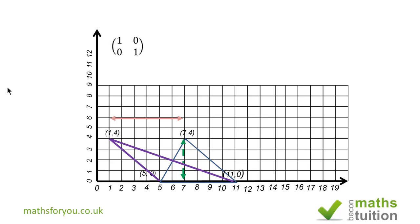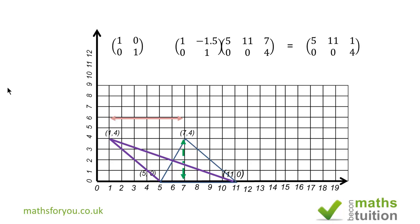Let's confirm this using the identity matrix. Our shear matrix is now [1, 0; −1.5, 1]. Multiplying by the various vertex coordinates gives (5,0), (11,0), and (1,4). So the (7,4) vertex has been transformed to (1,4) by shear.